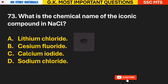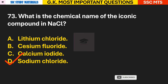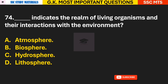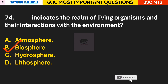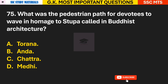Question 73: What is the chemical name of the ionic compound NaCl? Answer B — Sodium Chloride. Question 74: What indicates the realm of living organisms and their interactions with the environment? Answer B — the Biosphere. Question 75: What was the pedestrian path for devotees to walk in homage to a stupa called in Buddhist architecture? Answer D — it is called Medhi.